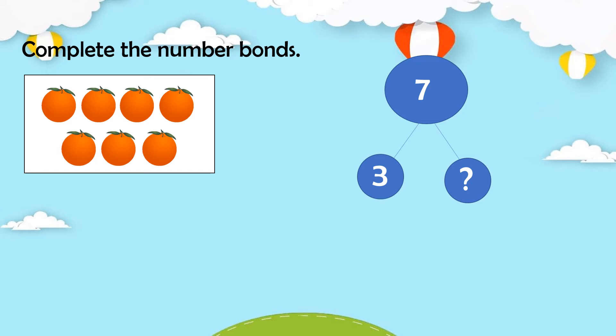Another example: there are seven oranges altogether and three are shown — find the missing part. To find the missing part, we can use adding up or count forward. Start from three and count until you reach seven: four, five, six, seven — that's four steps. Another way is by drawing a line. We have three shown, and counting what's left gives us four. So three and four make seven, or three plus four equals seven.